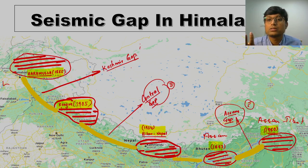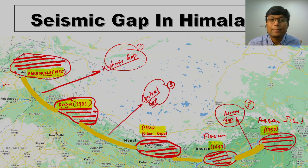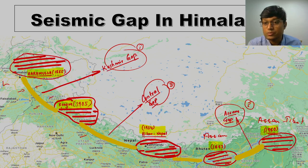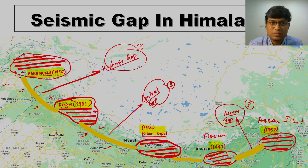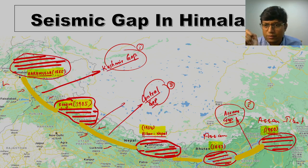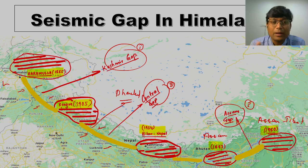So the Assam gap is the third gap, the central seismic gap is the second, and the Kashmir gap is the first. As per the theory of seismic gap, we can expect major earthquakes along these particular regions. Seismologists continuously track stress building along plate boundaries and identify particular segments within these seismic gaps which have higher stress than surrounding regions. Dharchula is located within the central seismic gap area, and they are saying that higher stress is building up there, which may result in a major earthquake.